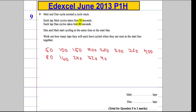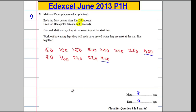We have an overlap at 400 — that means they're in the same place at the same time. Now, how many laps was that for Matt? One, two, three, four, five, six, seven, eight — eight laps for Matt. And that's going to be one, two, three, four, five — five laps for Dan.